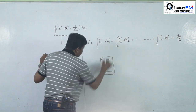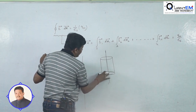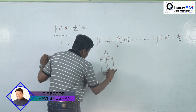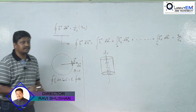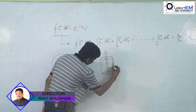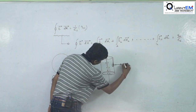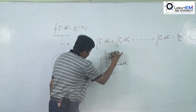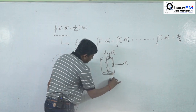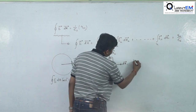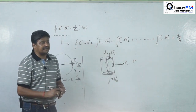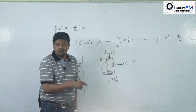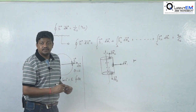Now for a cylindrical surface — consider a linear charge body of infinite length with a cylindrical Gaussian surface. A cylinder has three surfaces. The first surface has area vector dA1, the second has dA2, and the third has dA3. The area vector is always perpendicular to the surface and directed towards the observer.